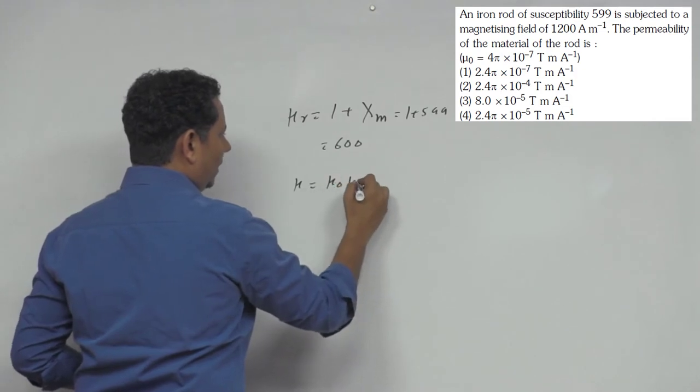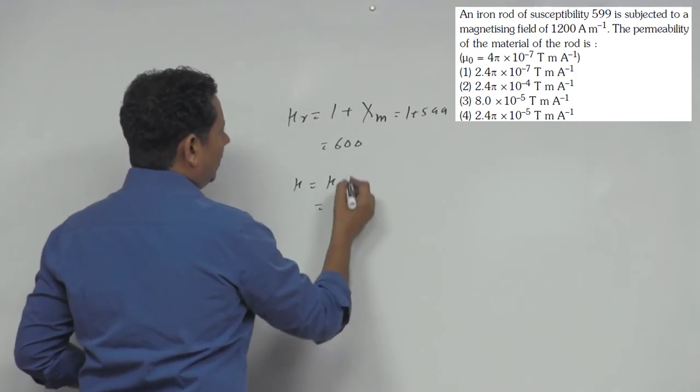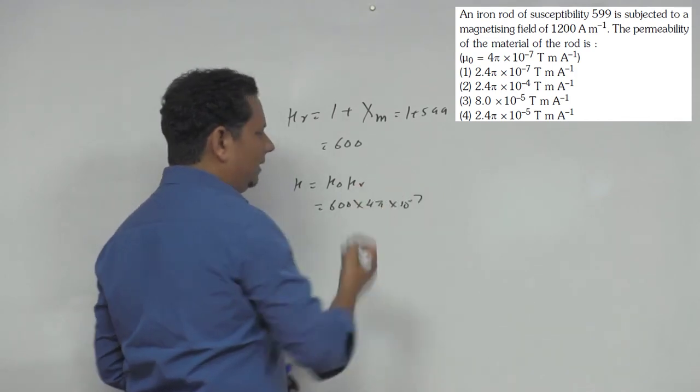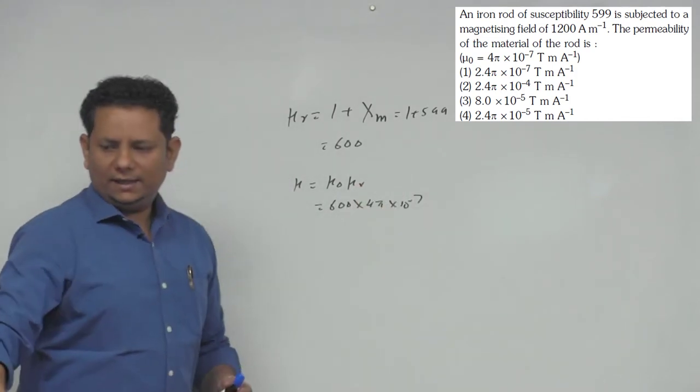Now μ will be equal to μ₀ multiplied by μr. So this will be equal to 600 multiplied by 4π × 10⁻⁷. This gives us our final answer.